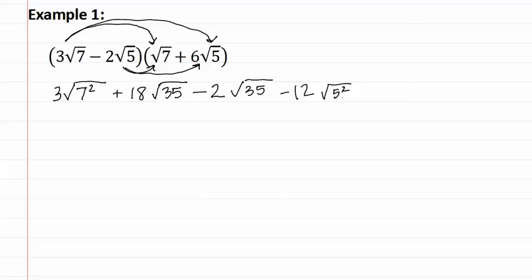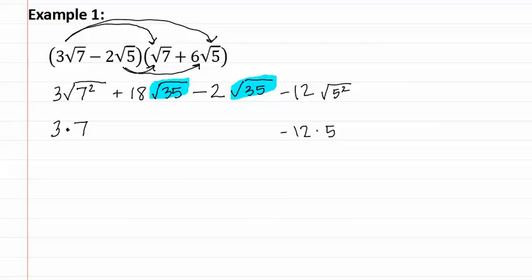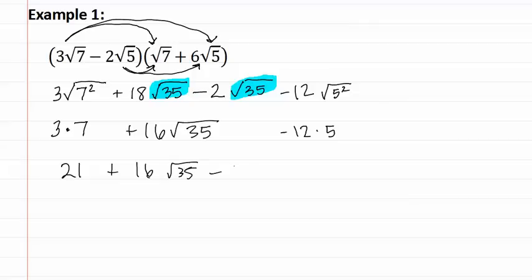Now let's simplify both the first and the last terms. We have three times seven, because seven squared is seven. The last term becomes negative twelve times five, because five squared is five. The two middle terms both have the same radical, which means that we can combine them. So we have eighteen minus two, which gives us positive sixteen square root thirty-five. Now let's multiply the first piece.